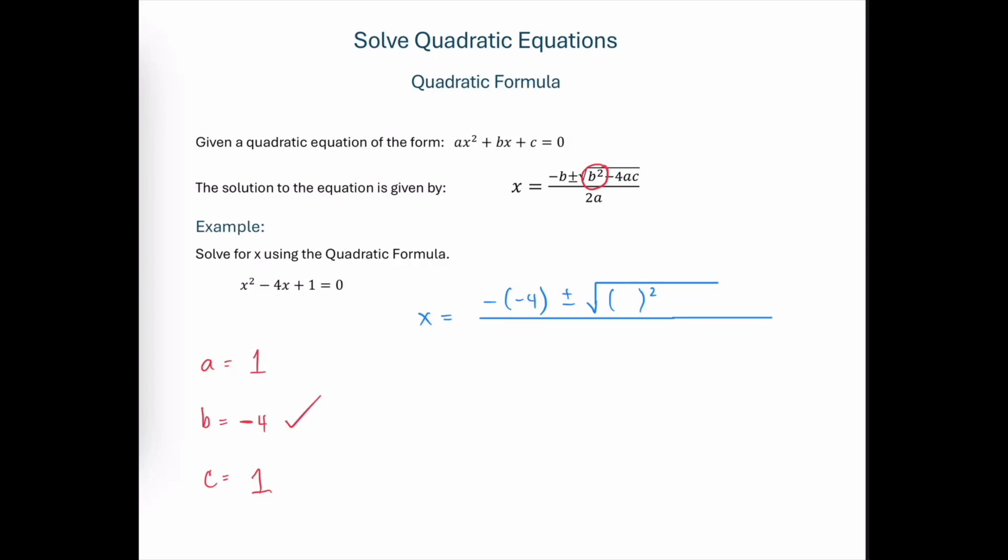Again, our b is negative 4, so we're going to be plugging negative 4 into this quantity that's being squared. And then from that, we subtract the product of 4 times a times c.